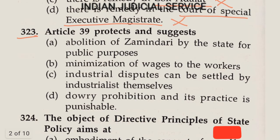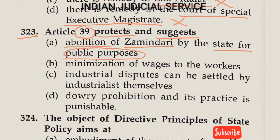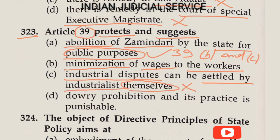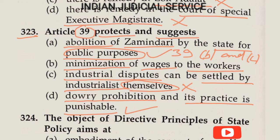Question Number 323: Article 39 protects and suggests — Option A: the abolition of zamindari by the state for public purpose — this is absolutely correct, clearly related to Article 39, clauses B and C; Option B: minimization of wages to workers; Option C: industrial disputes can be settled by industrialists themselves (wrong); Option D: dowry provisions are punishable (not provided in Article 39). The answer is Option A — abolition of zamindari by the state for public purpose.